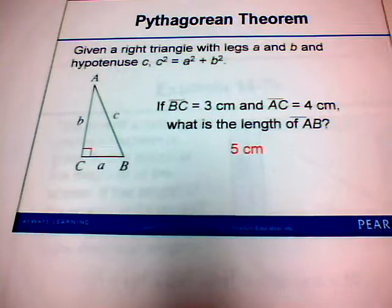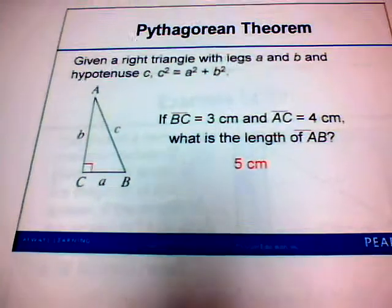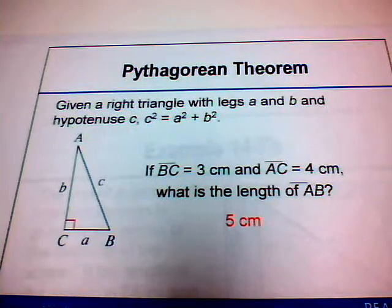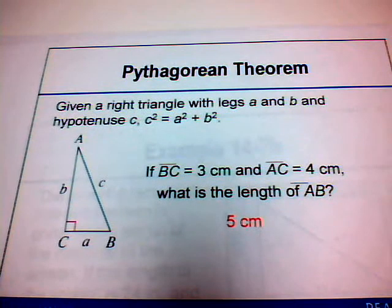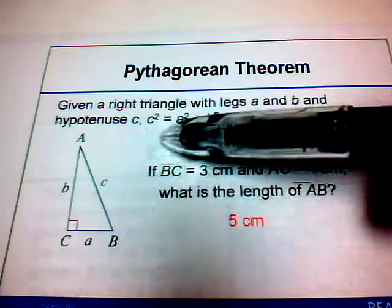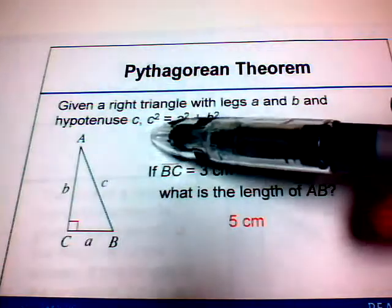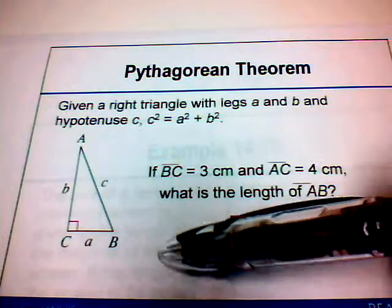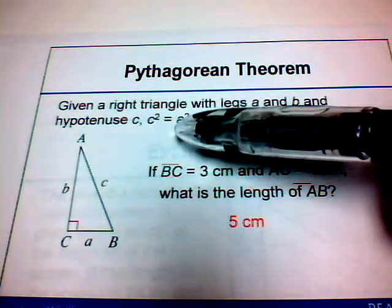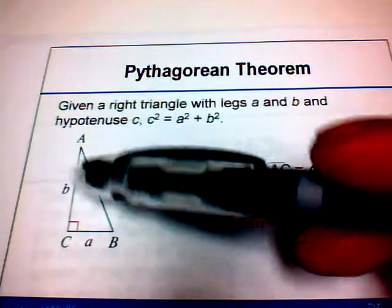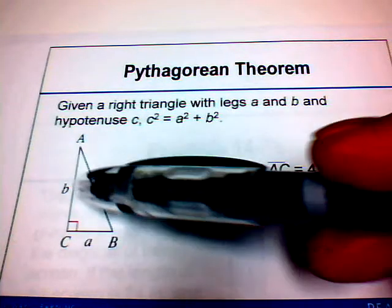Next we'll talk about the Pythagorean Theorem formula. If you're given a right triangle with legs A and B and the hypotenuse called C, then the square of the hypotenuse — that's C squared — is equal to the sum of the squares of the lengths of the two legs.